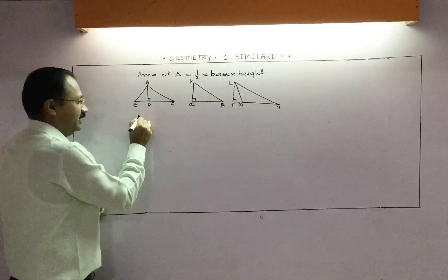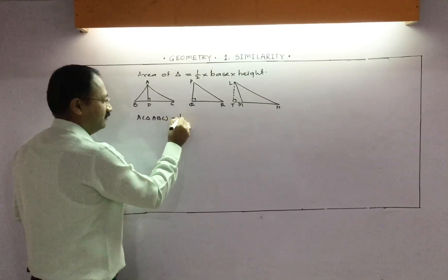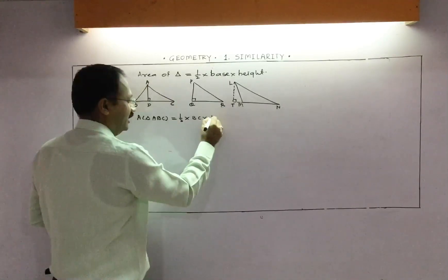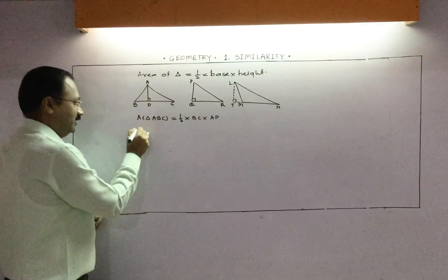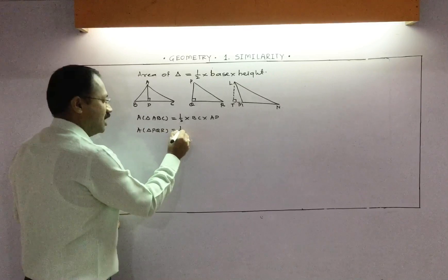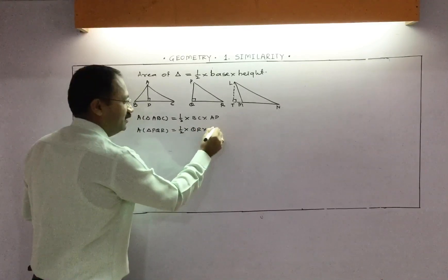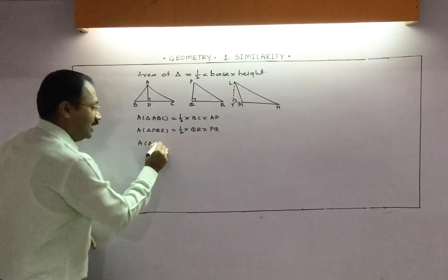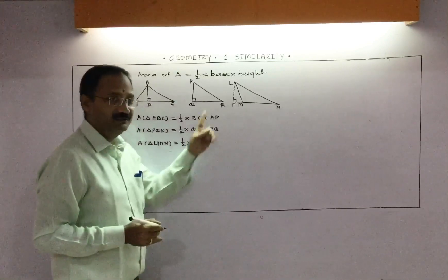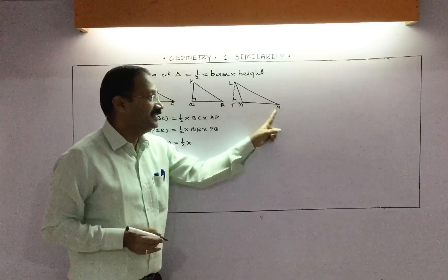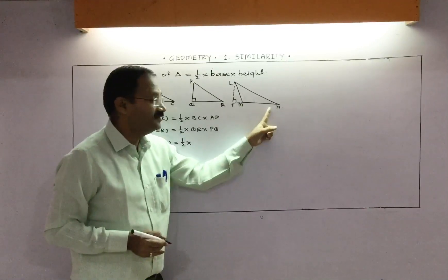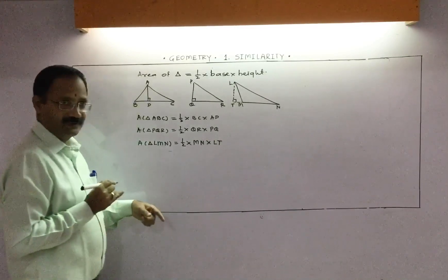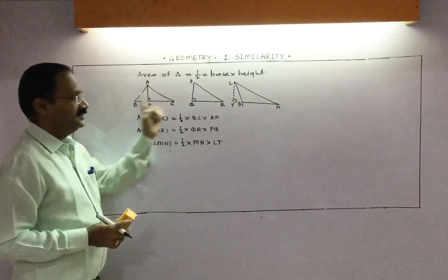Now we can write the area of these triangles. Area of triangle ABC equals to half into base BC into height AD. Area of triangle PQR equals to half into base QR into height PQ. In the third triangle, area of triangle LMN equals to half — note that TN is not the base, because the original triangle is LMN. Therefore its base is MN and height is LT.